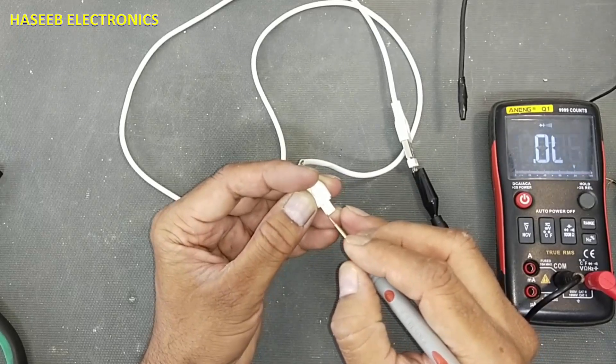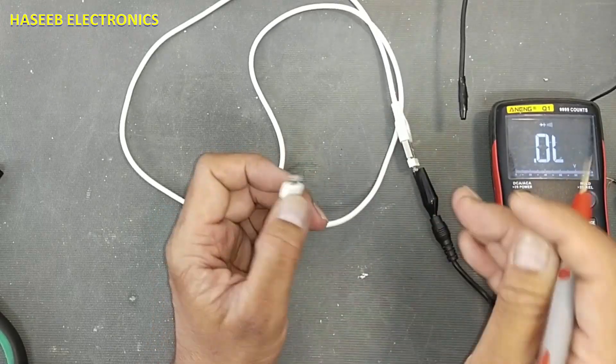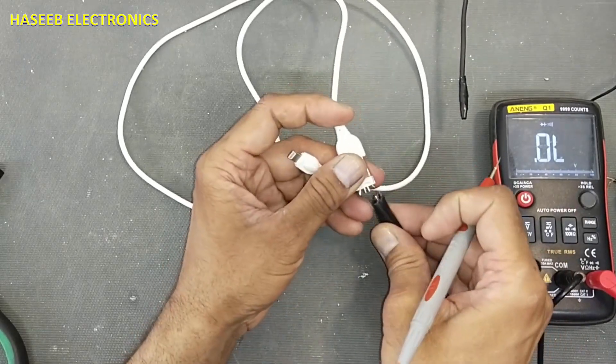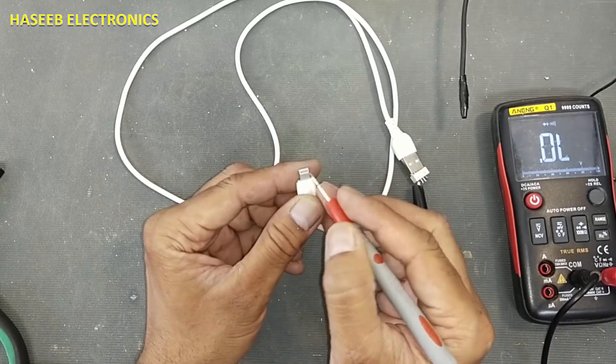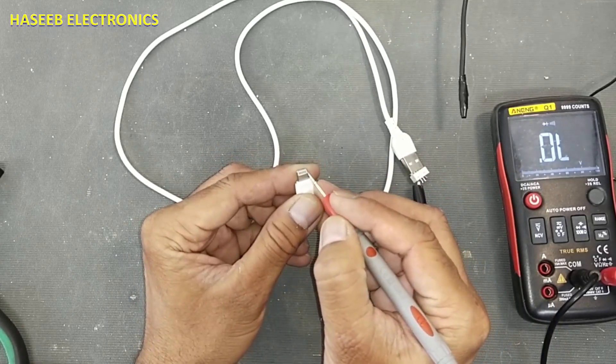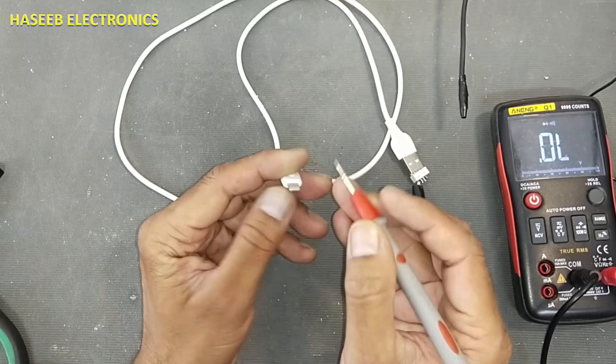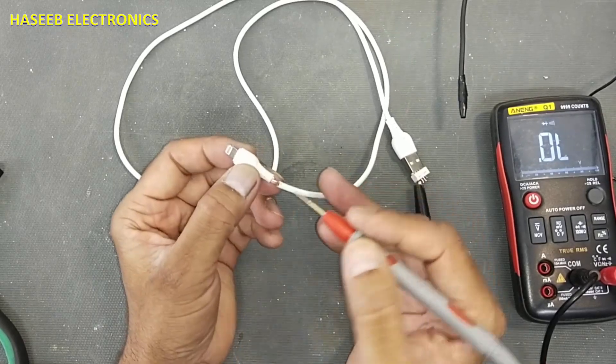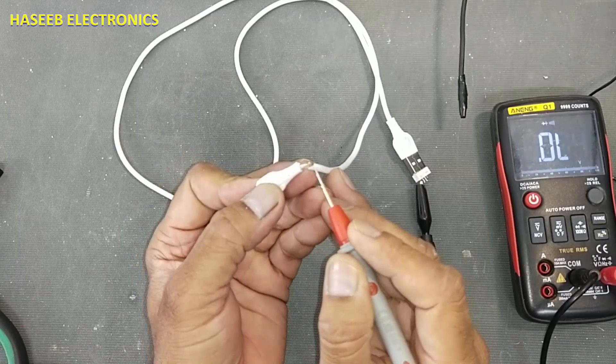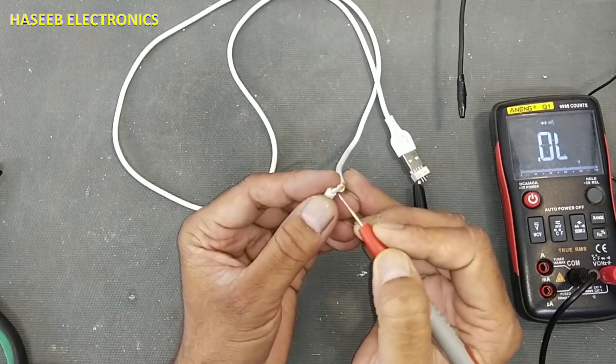And this side, the first pin ground. Now connect to the last one pin. So the last pin is not connected. If you see here, yes, this wire is damaged from here.